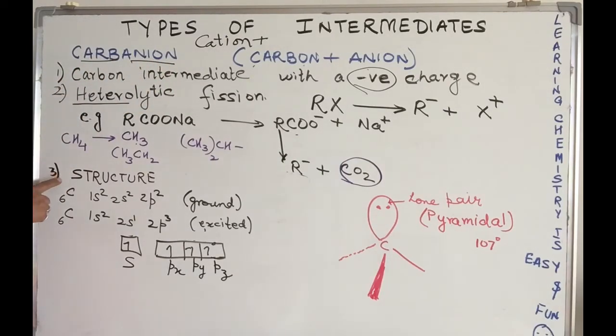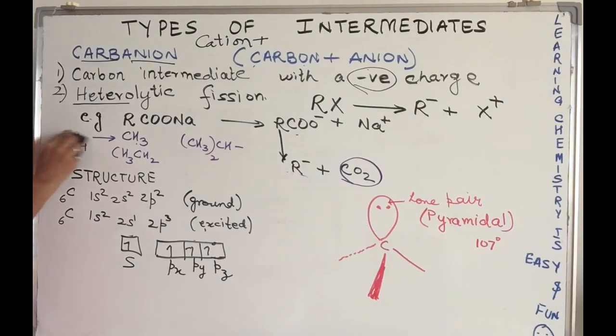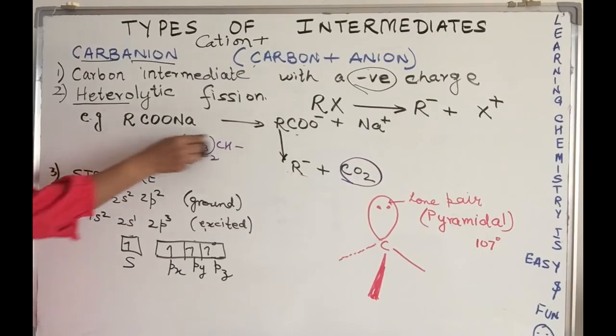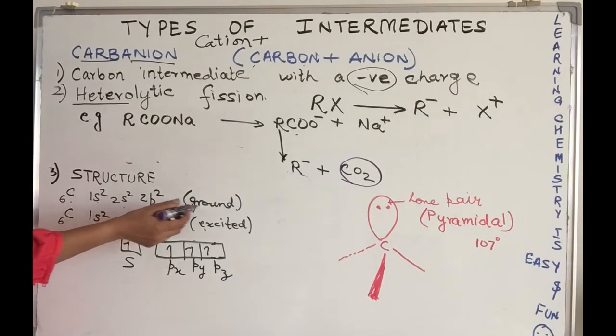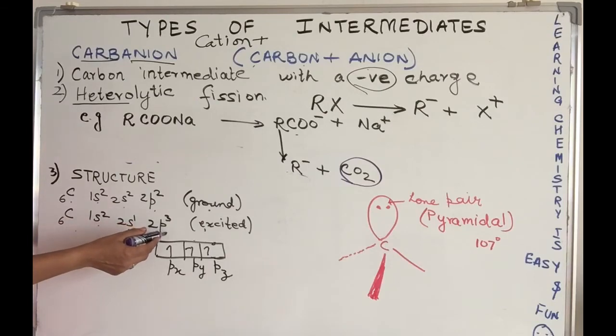Let's look at the structure of this carbon anion. To draw any structure, step one is to write its electronic configuration. Carbon atomic number 6: ground state is 1s2, 2s2, 2p2. Excited state is 1s2, 2s1, 2p3.